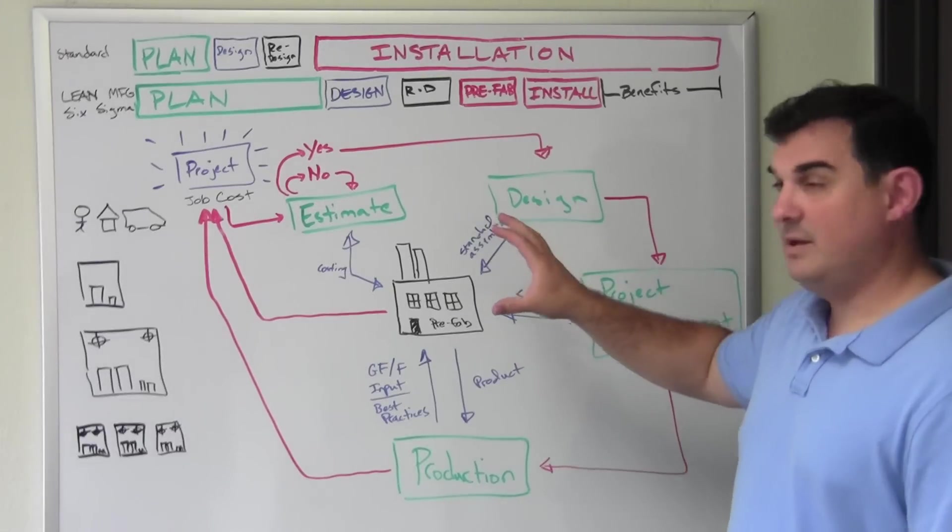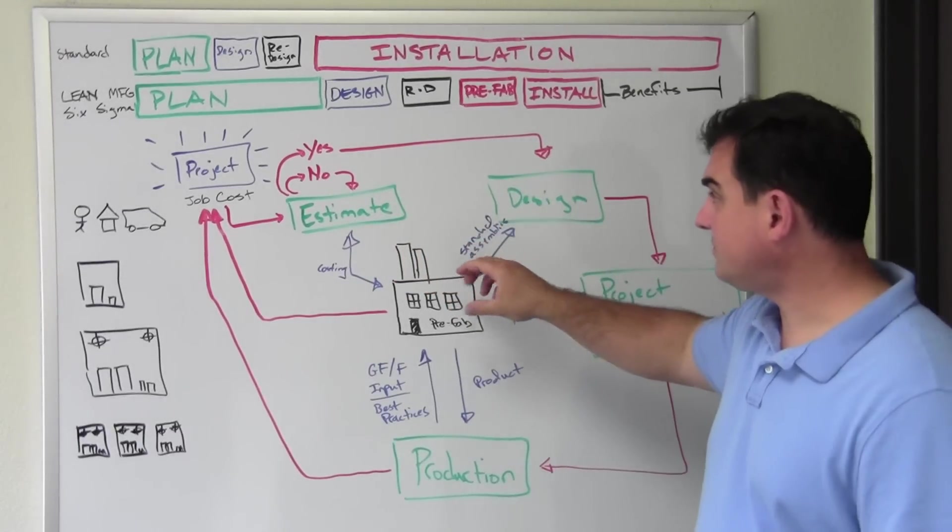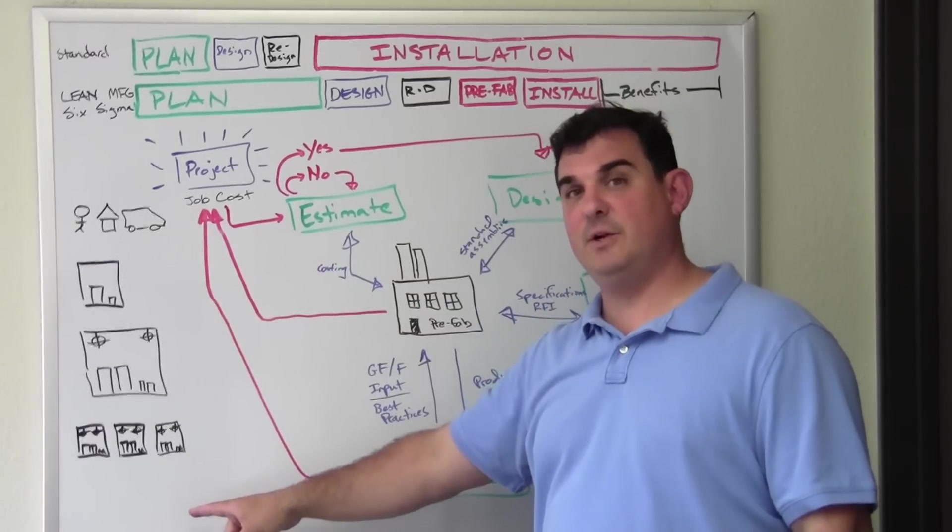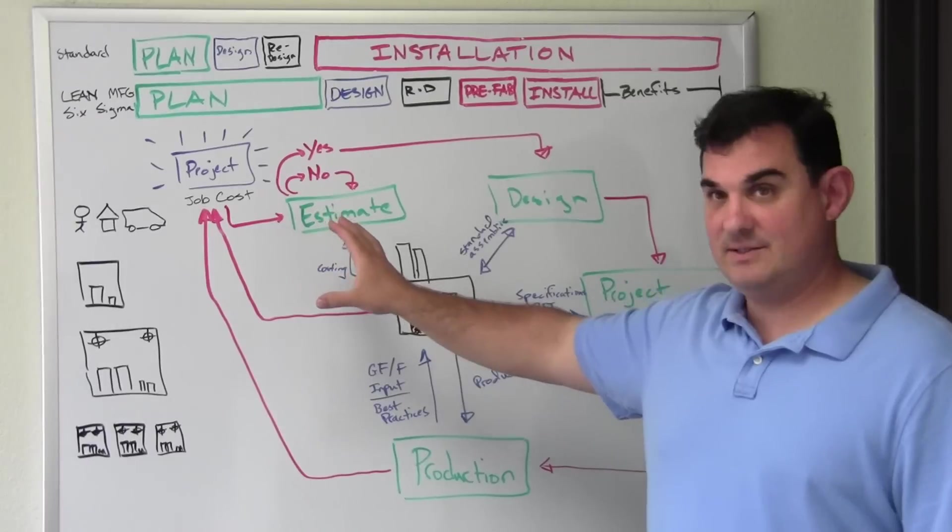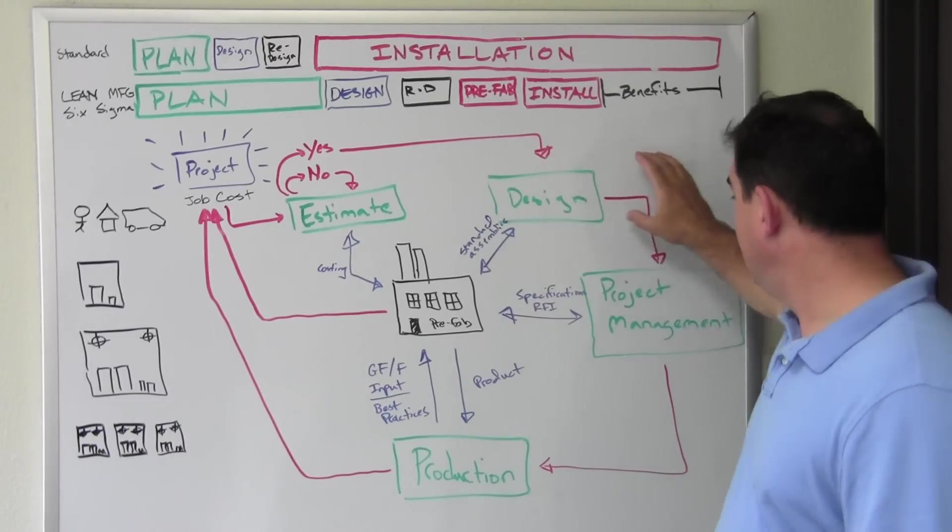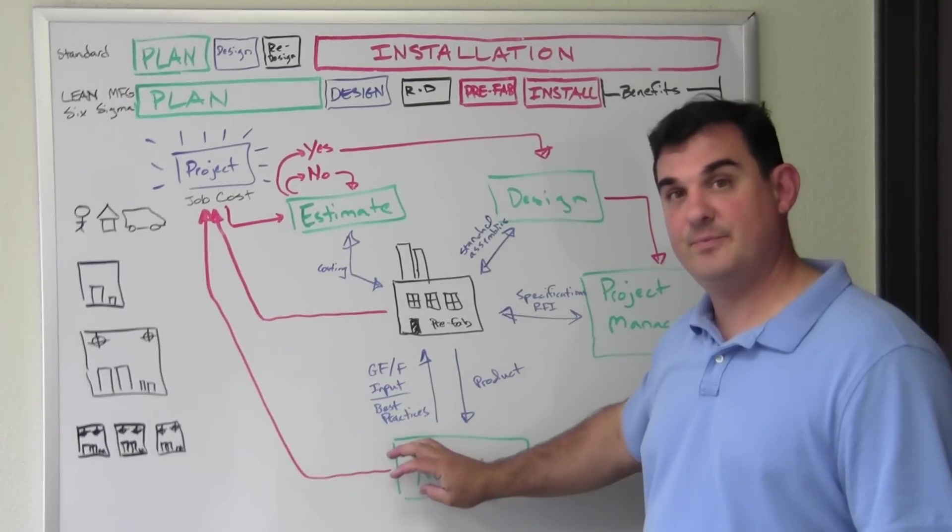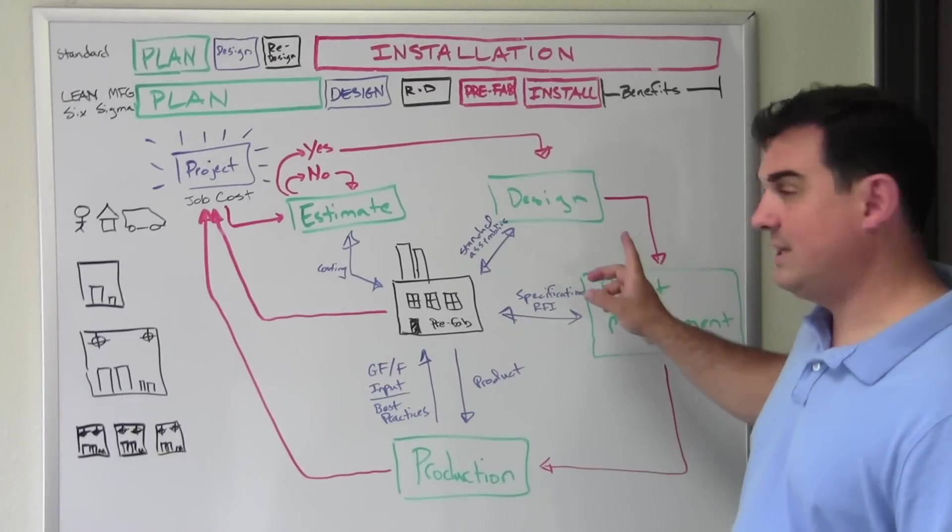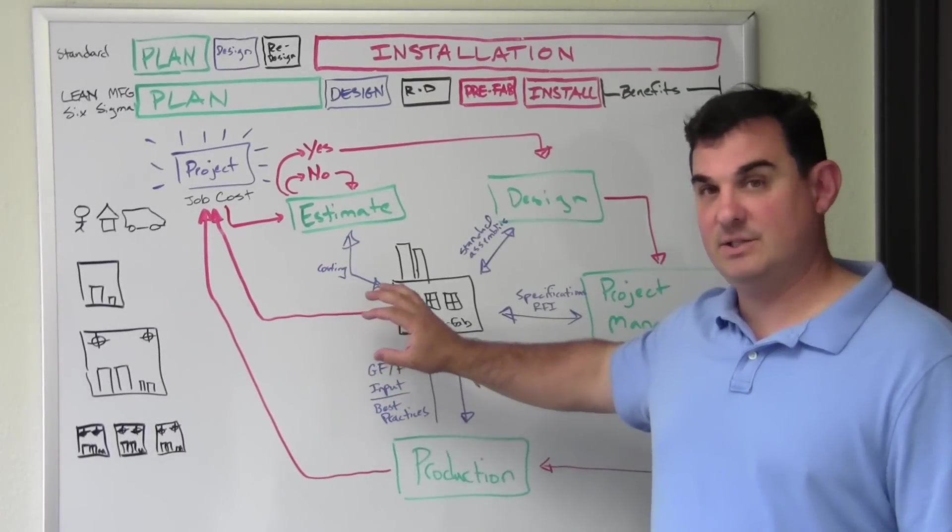Let's see how the production flow works on a project. It doesn't matter what level you're at in your institution. Everybody does the same things. You estimate a job, you design a job, you manage it somehow, and then you produce. Now normal design, normal production flow doesn't have a prefabrication department in it.